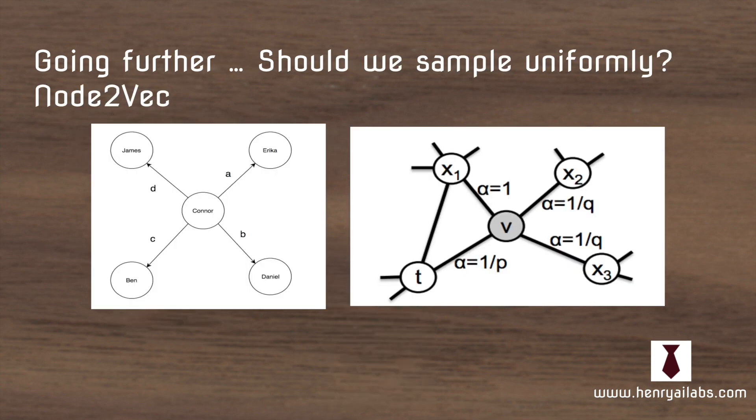So going further, should we sample uniformly? In DeepWalk, we treat A, B, D, and C all with the same probability of going to the next node. But in Node2Vec, we're going to parameterize how we traverse the random walk.